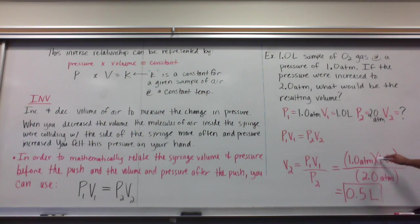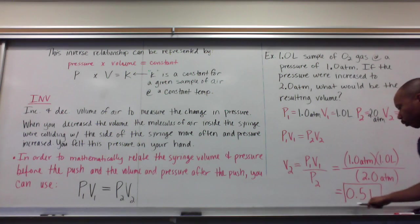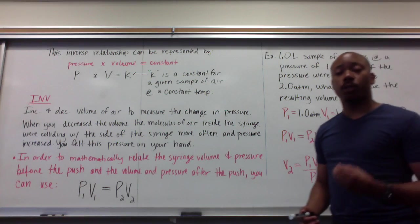I fill in. Initial pressure, one atmosphere, times my initial volume of one liter, divided by my final pressure of two atmospheres. And I get a final volume, V2 is equal to 0.5 liters. Now, does that make sense? Absolutely.